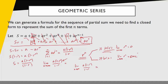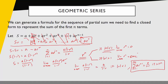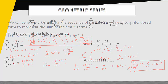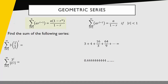When the absolute value of r is less than 1, the r to the n piece goes to 0, and we're left with a over 1 minus r. That tells us what the series sums to. So the sum of the series — a times r to the n minus 1, from n equals 1 to infinity — equals a over 1 minus r, if the absolute value of r is less than 1. That is the convergence rule for geometric series. Here is the summary of our two geometric series formulas: one for the finite series, and one for the infinite series.